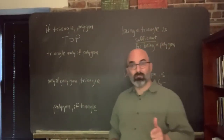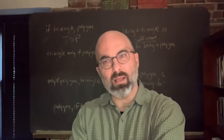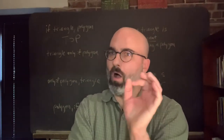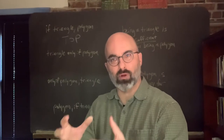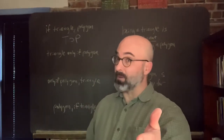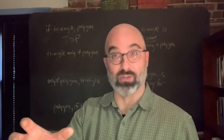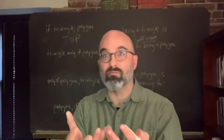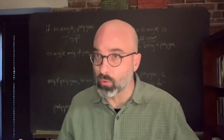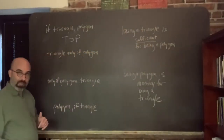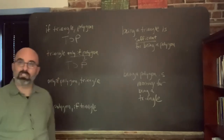Something's a triangle only if it's a polygon. Do 'only if' claims go in the antecedent? The answer is no. Only if claims go in the consequent of conditionals. An 'only if' claim works like a prerequisite — you graduate only if you take a writing class. That doesn't mean that if you take a writing class, you graduate. It means that if you're graduating, you took a writing class. So, triangle only if polygon gives us T horseshoe P.